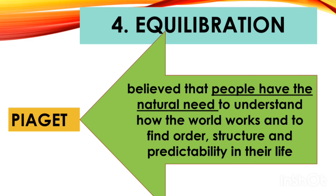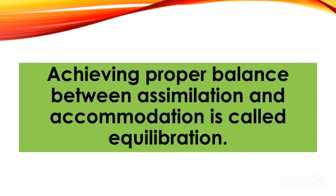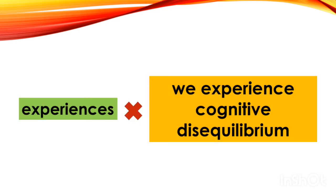The fourth concept is equilibration. Piaget believed that people have a natural need to understand how the world works and to find order, structure, and predictability in their lives. Achieving proper balance between assimilation and accommodation is called equilibration. As humans, we need to properly balance between assimilation and accommodation.